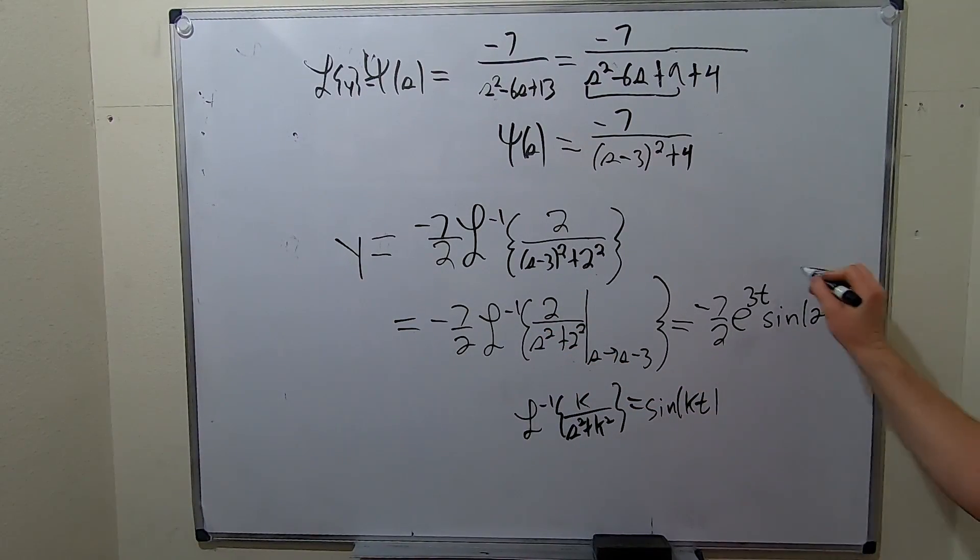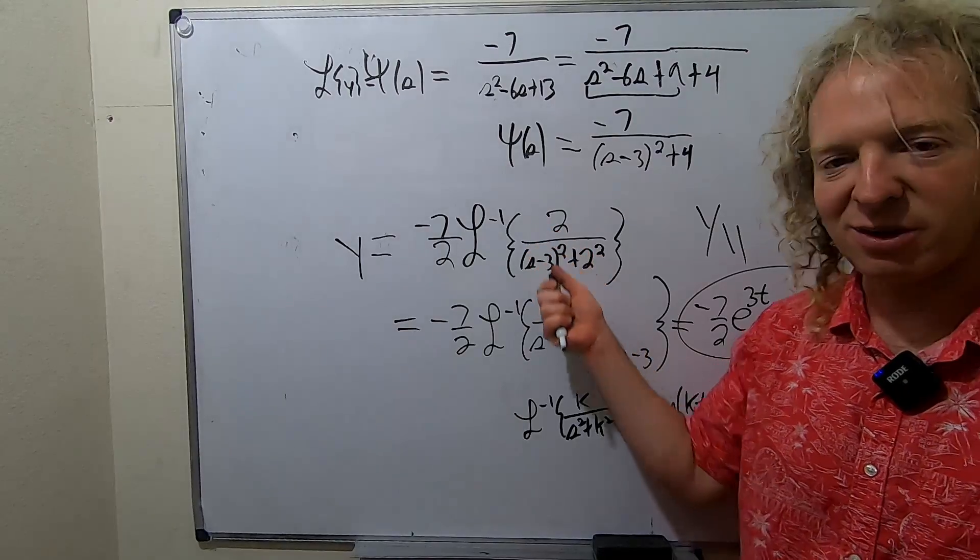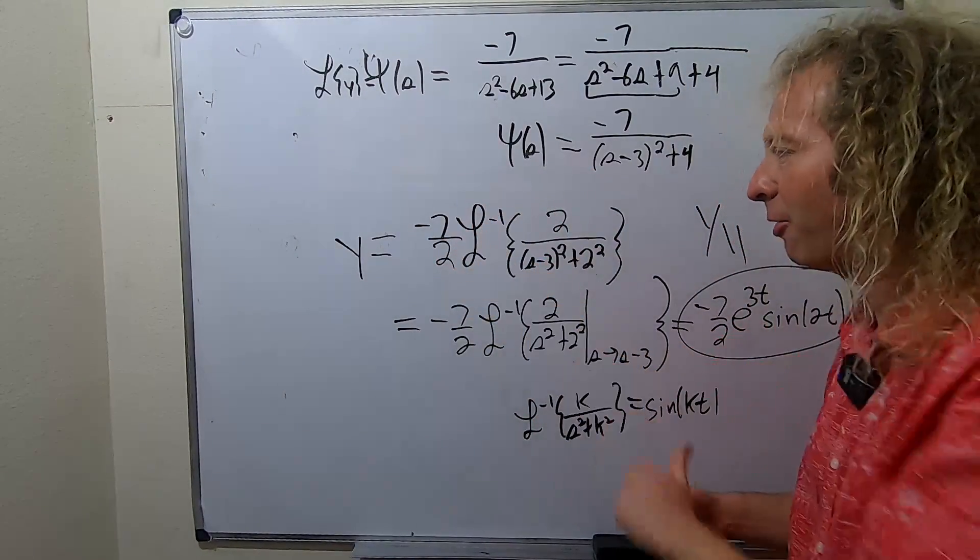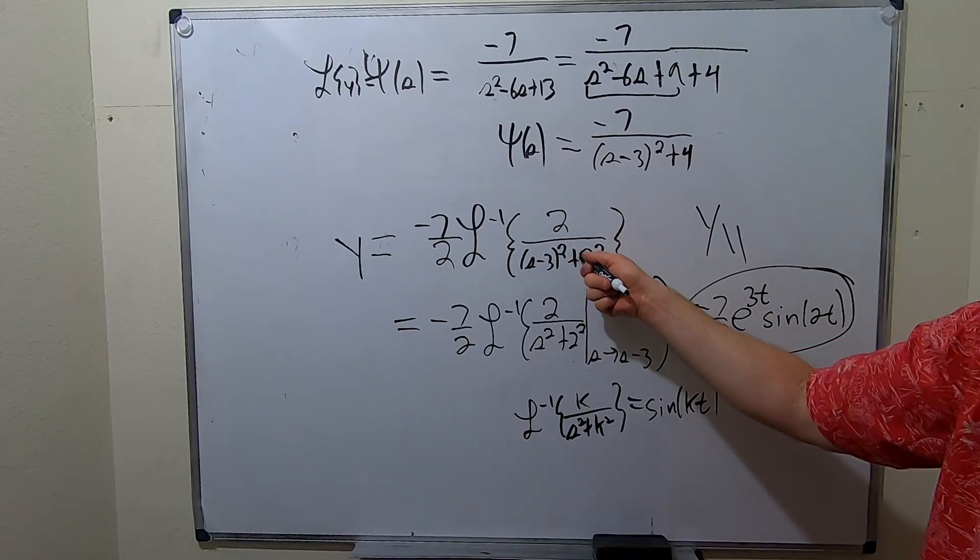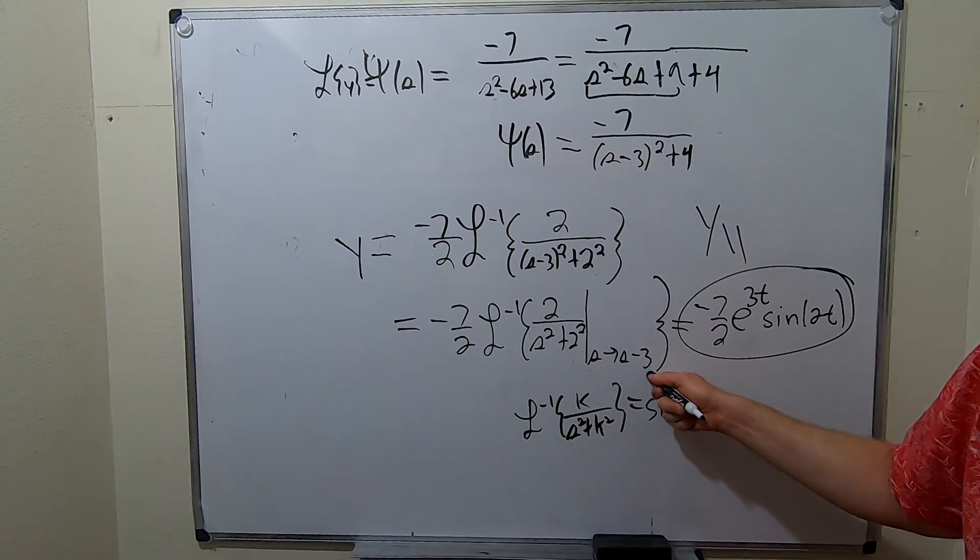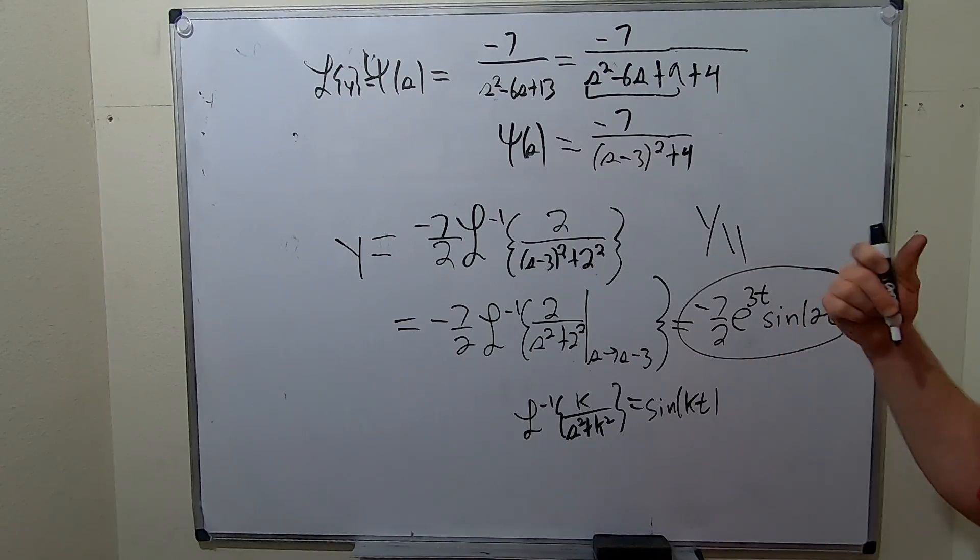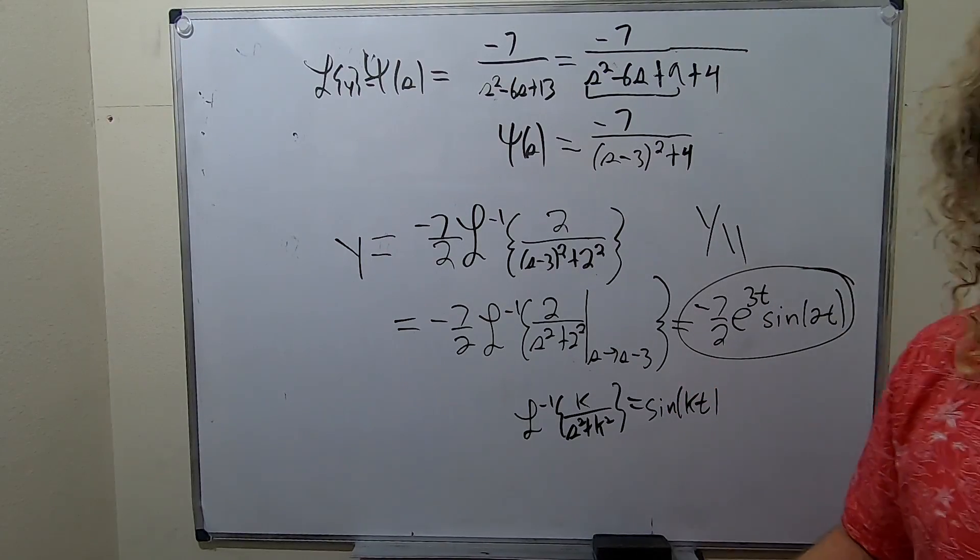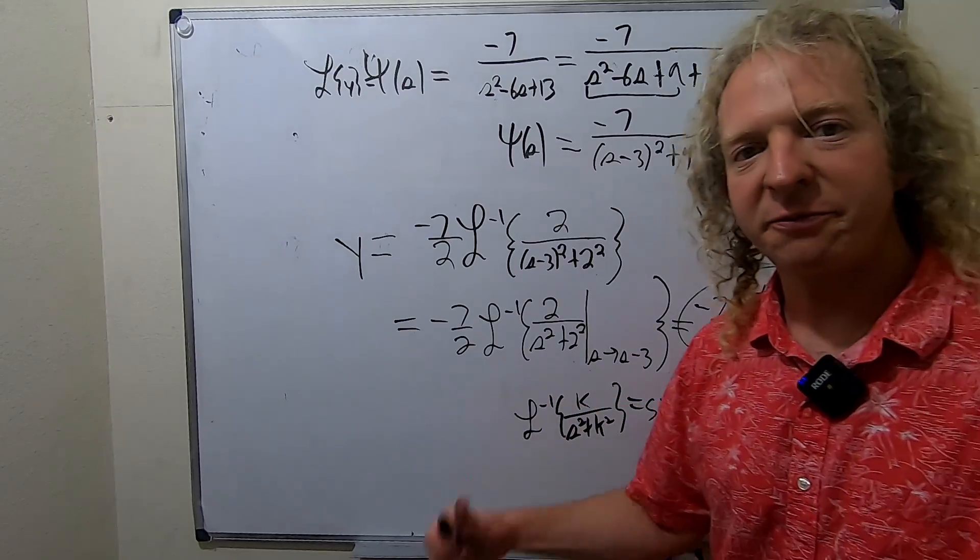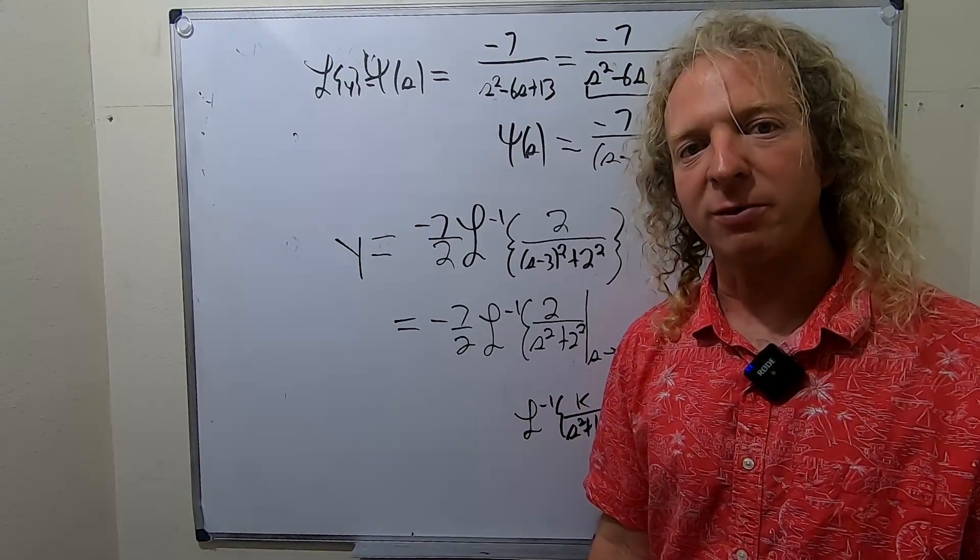And that, my friends, is the solution to the DE. So Y is equal to this thing right here. So pretty nice problem. At the end, you do have to use a shift. You do have to do some adjustments with the algebra. You have to put the 2 there to make it match. When you do the shift, it gives you the E. So if it's S minus 3, you get an E to the 3t. Really, really nice question. It's not too hard, but it does require that you know a lot of stuff. I hope this video has been helpful. Take care.